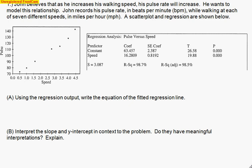The purpose of this video is to show you guys an example and give you a chance to maybe pause the video and do the work on your own, then hit play and see if you get the answer right. Here's the question: John believes that as he increases his walking speed, his pulse rate will increase. Makes sense - run faster, heart beats faster. He wants to model this relationship. John records his pulse rate in beats per minute while walking at each of seven different speeds in miles per hour. A scatterplot and regression are shown below.